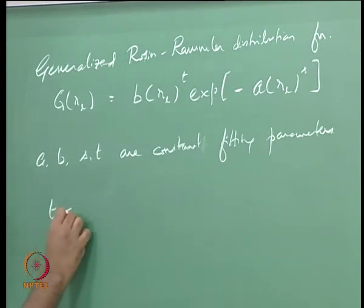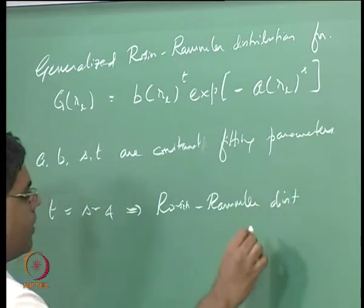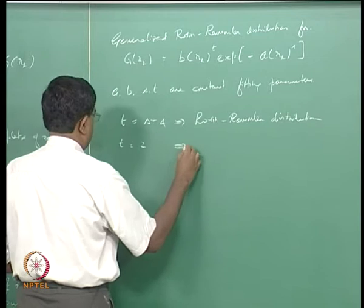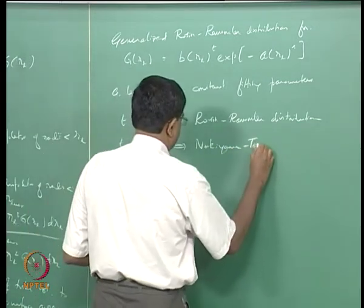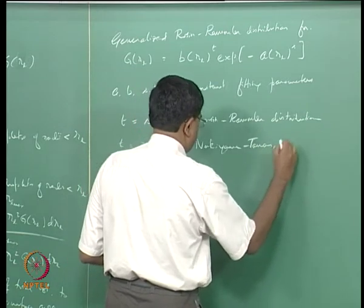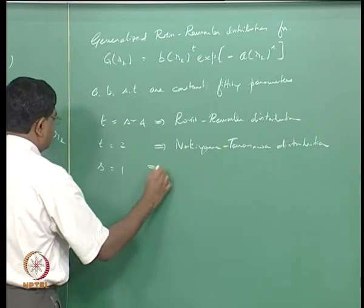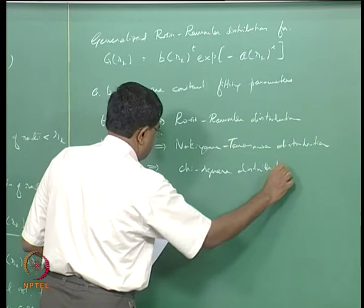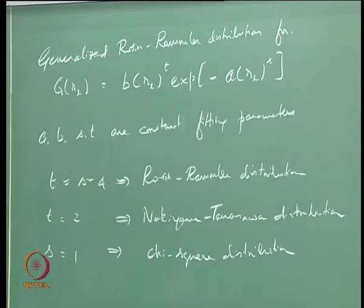There are special cases: t = s−1 (or s−4) gives the original Rosin-Rammler distribution; t = 2 corresponds to the Nukiyama-Tanasawa distribution; and s = 1 gives a chi-square distribution. So you have these four constants as the conserved parameters to look for when trying to fit curves.